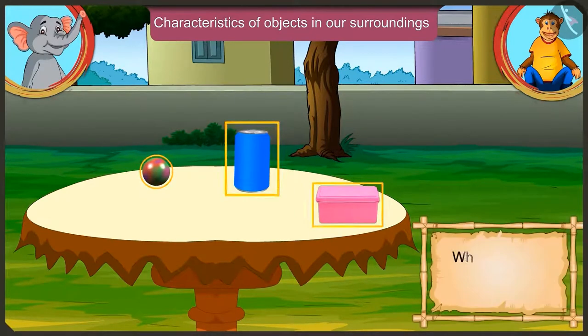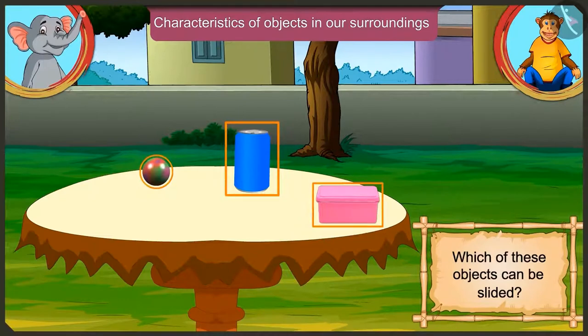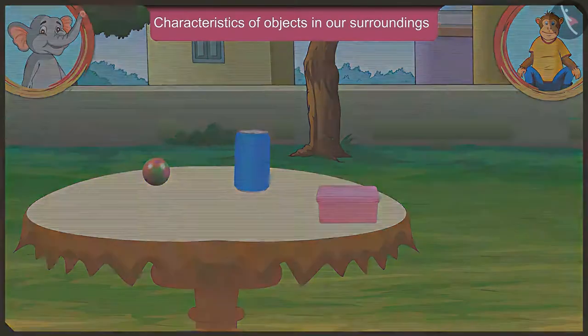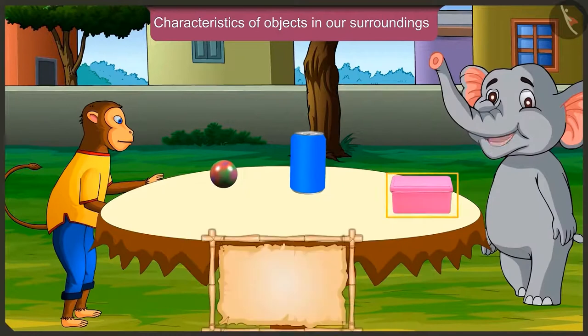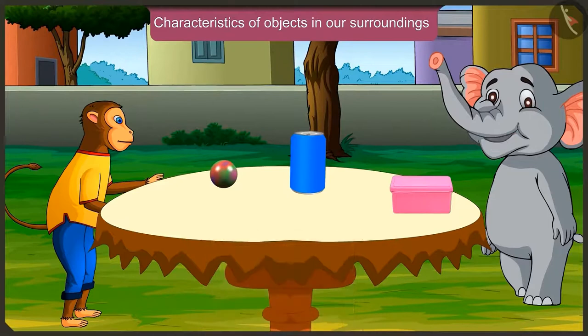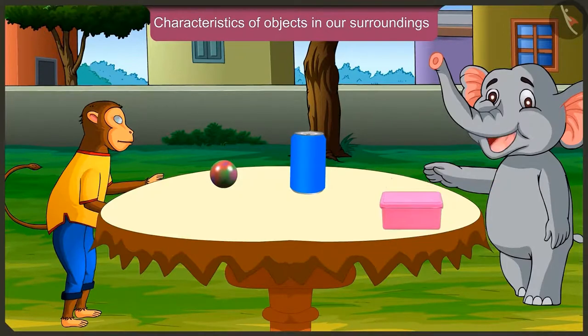Now tell me, which of these objects can be moved? This is very simple. Look, this lunchbox has a flat surface. We cannot roll it like a ball. We can only slide it.